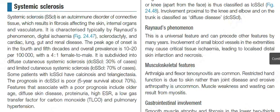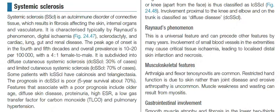Systemic sclerosis is an autoimmune disorder of connective tissue which results in fibrosis affecting the skin, internal organs, and vasculature. It is characterized typically by Raynaud's phenomenon, digital ischemia, sclerodactyly, and cardiac, lung, gut, and renal disease.